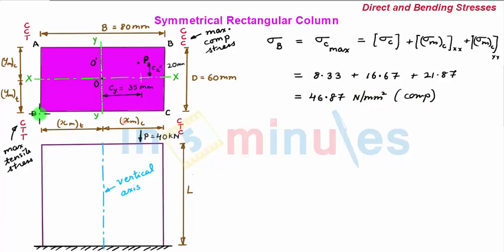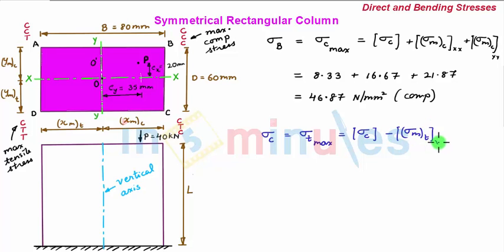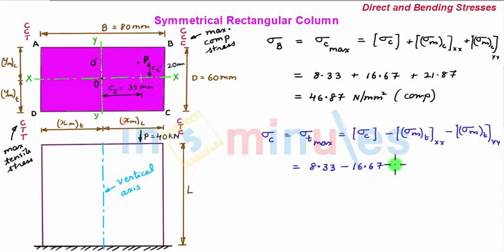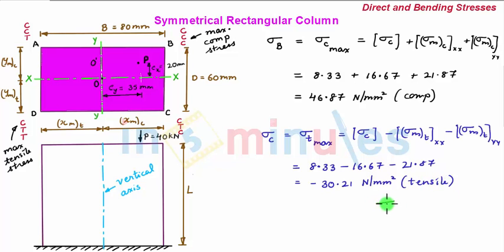Next, we determine the stress at point E, where the stress will be the maximum tensile stress. This is given as sigma_C minus sigma max of tension due to bending about the XX axis minus sigma max of tension due to bending about the YY axis. Substituting the values: 8.33 − 16.67 − 21.87, which gives minus 30.21 N/mm². Since the result is negative, we have tensile stress. With this, the problem is solved.